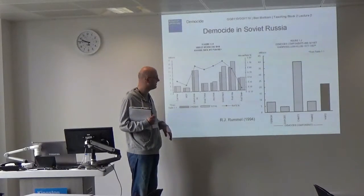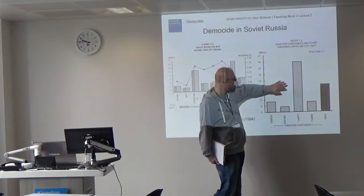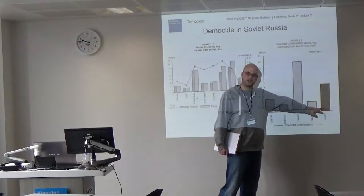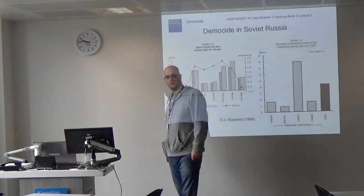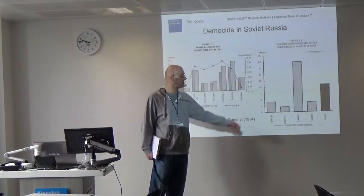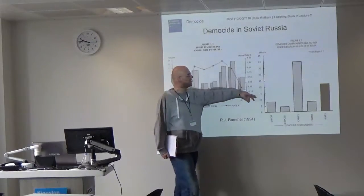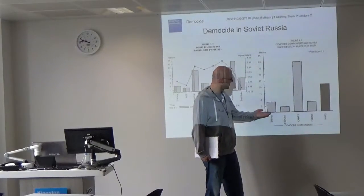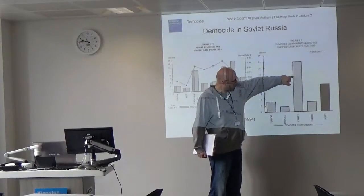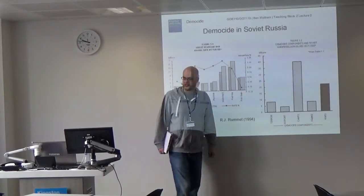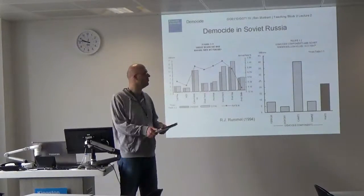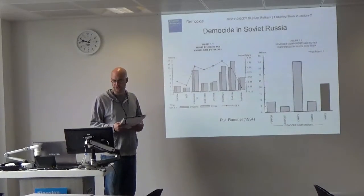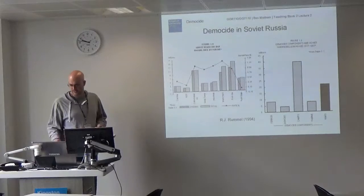If we look at the aggregate deaths, the black line shows war deaths including the Second World War. But these other lines are the deaths committed by the government on its own civilians. The vast number of those deaths were under the Gulag system — if you were a seditionist, you would be sent off to the Gulags in Siberia where you would be worked to death or left to rot and die under those awful conditions.